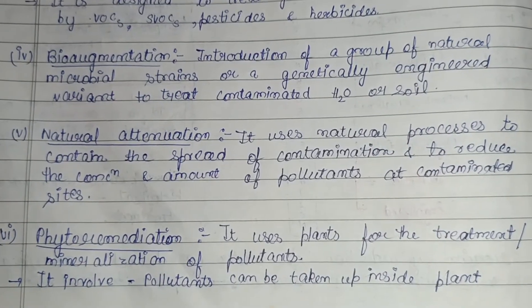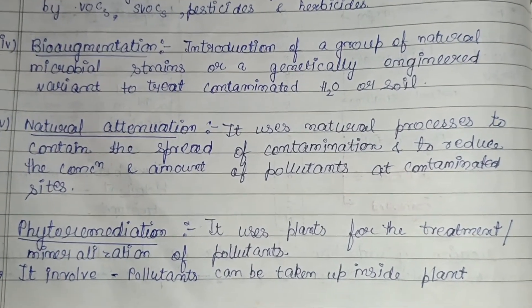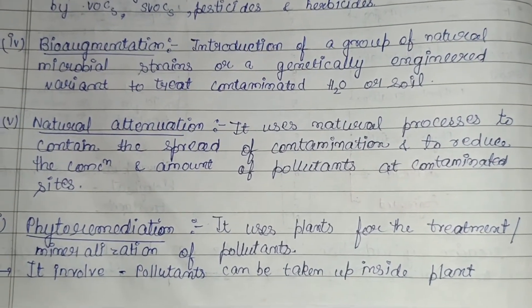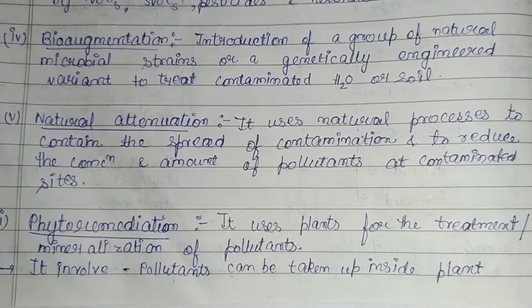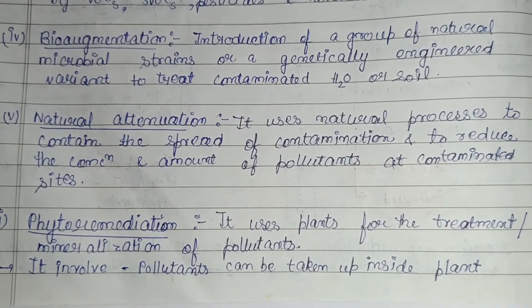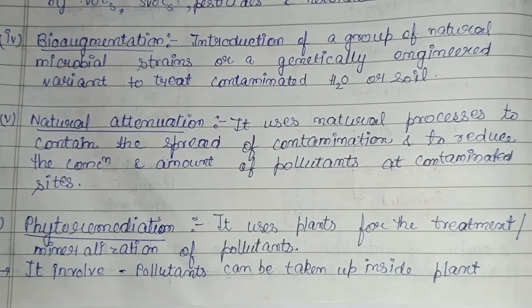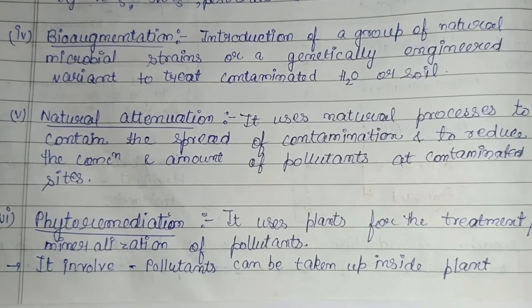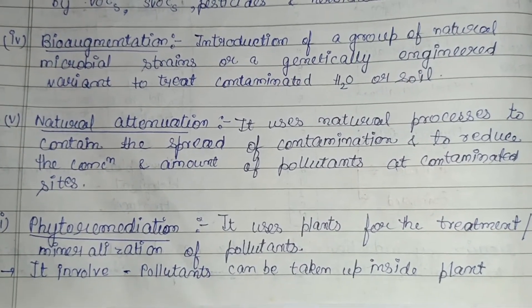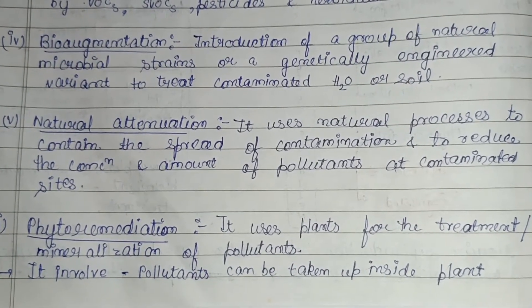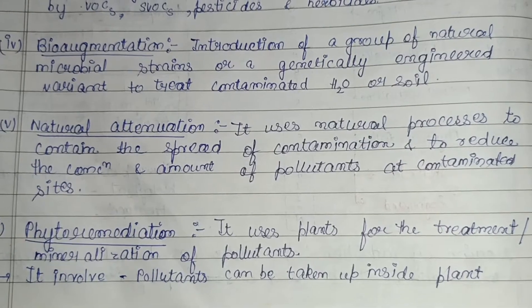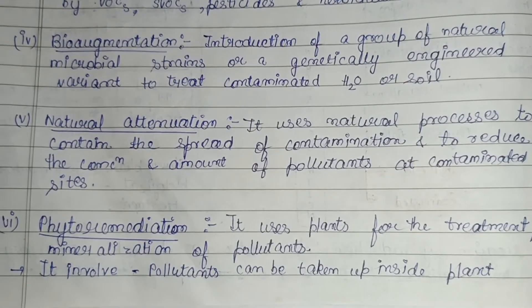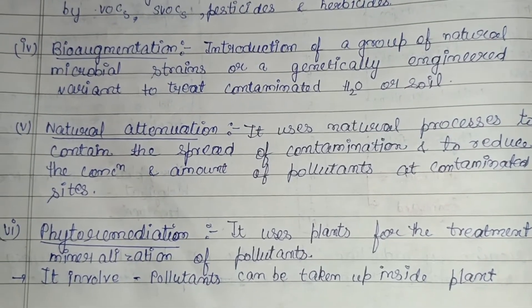Natural attenuation uses natural processes to contain the spread of contamination and to reduce the concentration and amount of pollutants at contaminated sites.